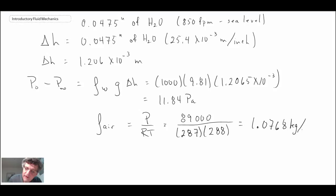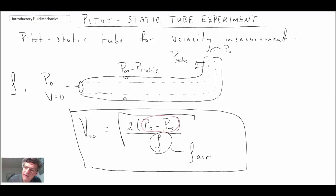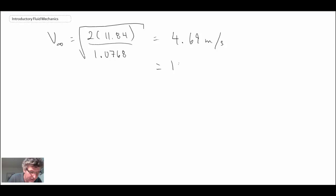I'm going to take this delta P measurement and put it into this equation here for the pitostatic tube, enabling us to determine the velocity. When we do this, we get about 4.69 meters per second is what the pitostatic tube was exposed to. Now I'm going to convert that to British units because that's what we had on the incline manometer. I just want to take a look as a sanity check to see how close we are.